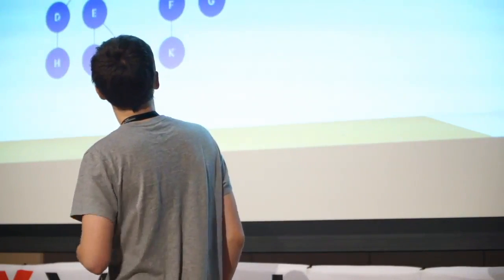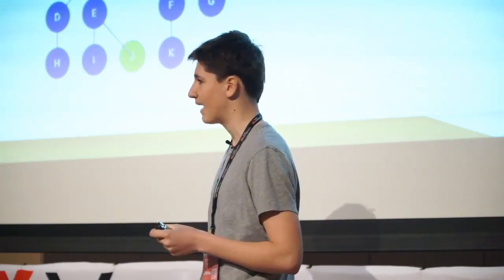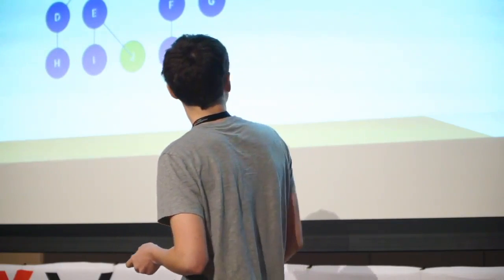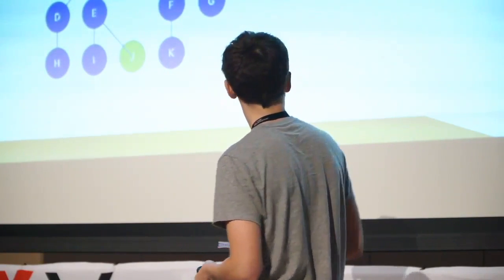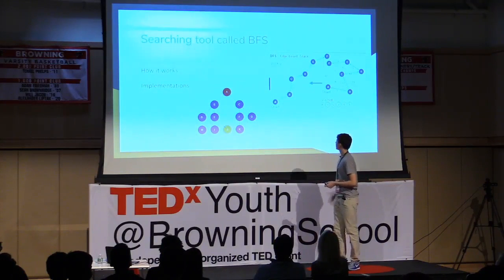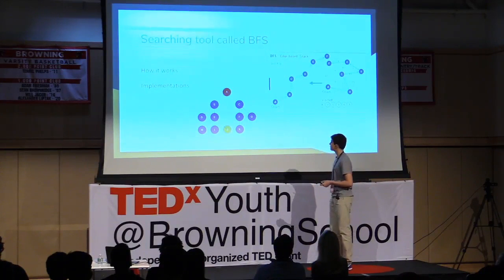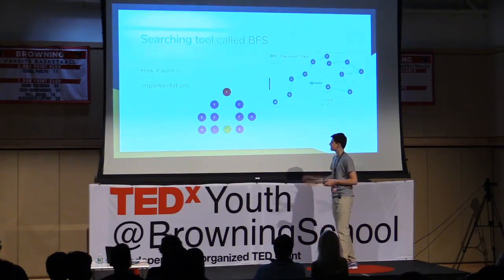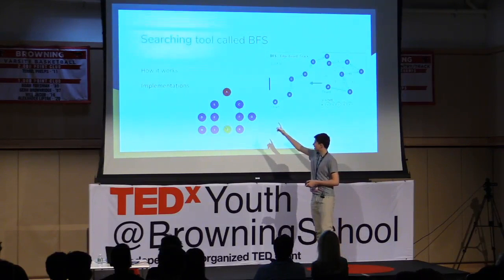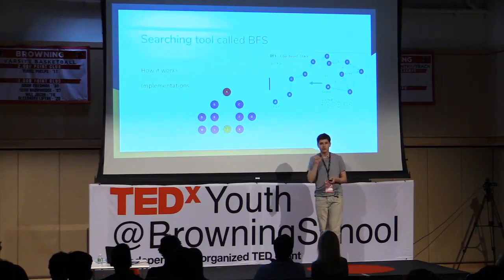This goes into something called BFS — breadth-first search — which is a way of looking at data structures and finding the shortest path to something. This is a common problem: you have a start point and an end point, and how do you get to the end point? Many people would have to do math and start counting, but if I put this into a program that finds the shortest path, it'll do it really easily in a few seconds. In this diagram, how do I get from A to J? It finds all different solutions and then chooses the one with the shortest path.